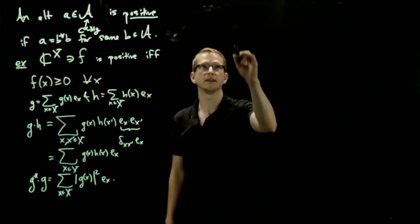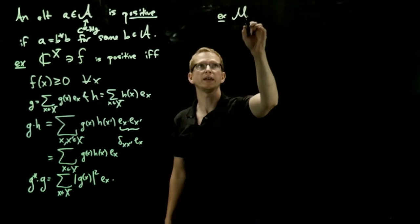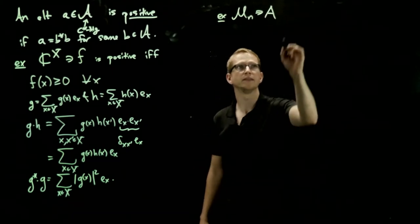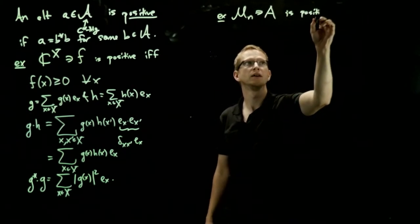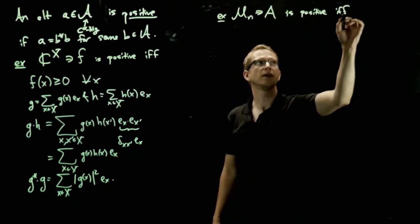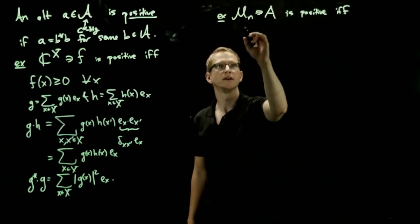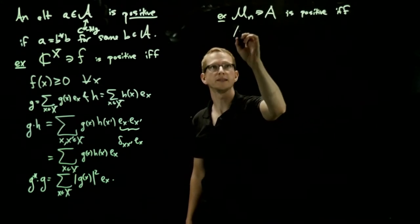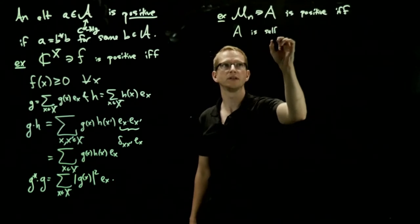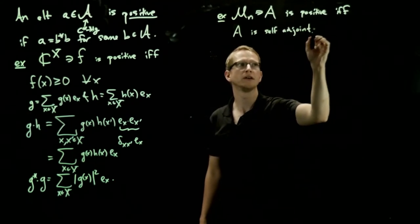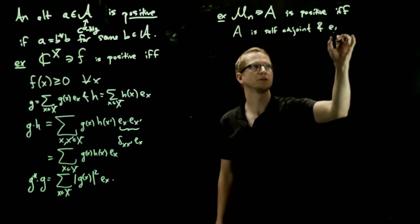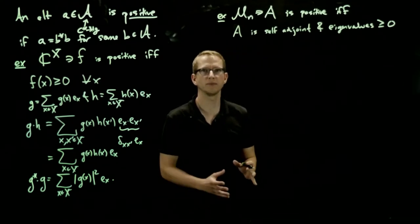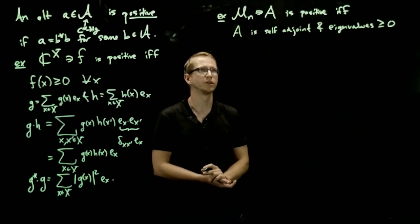So now let's take our example from before of n by n matrices. And if we take a specific n by n matrix, then this is positive if and only if, let's see how many ways are there to say this. One way is to say that A is self-adjoint and the eigenvalues are all greater than or equal to 0. So sometimes this is called positive semi-definite.